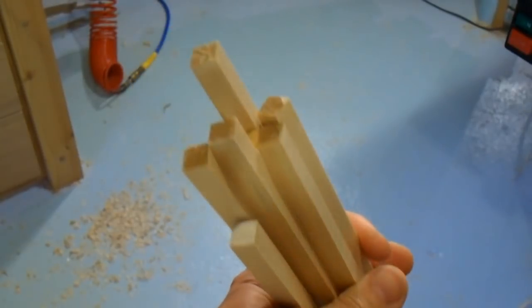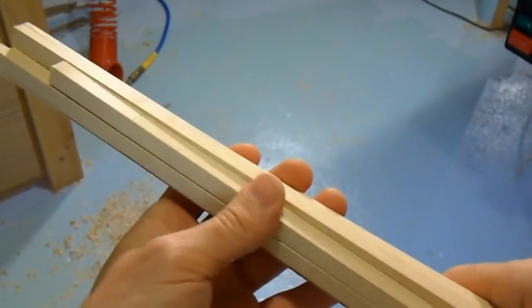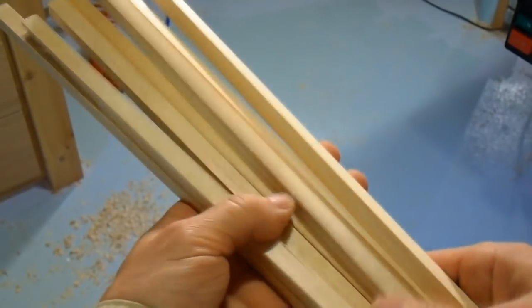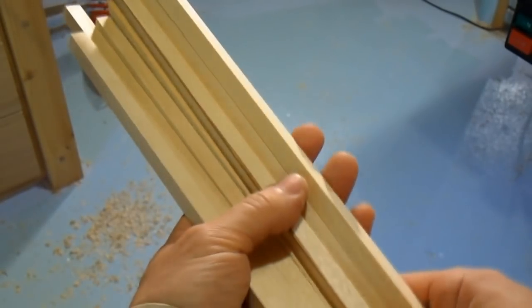Now, I could probably use these sticks square straight in my dowel making method. But I find it helps to round off the corners. That's what I'll do next.